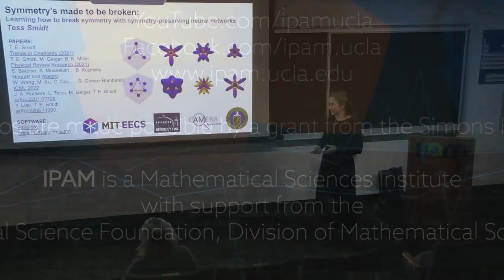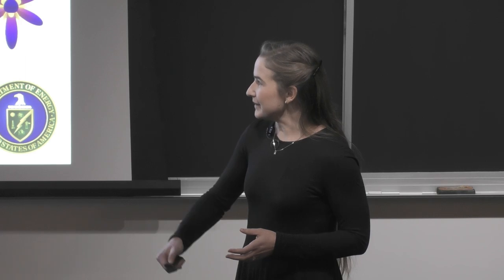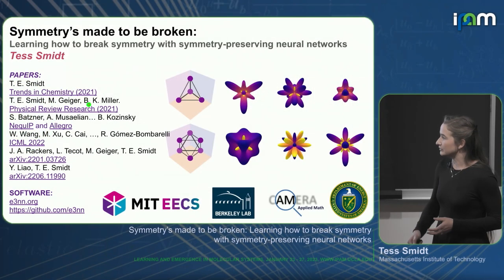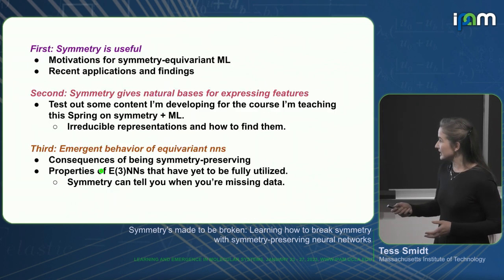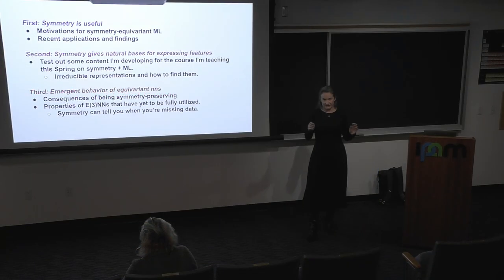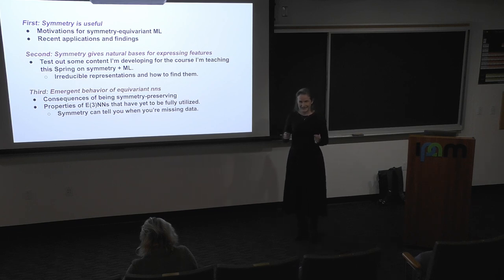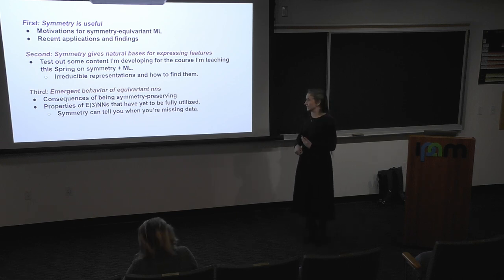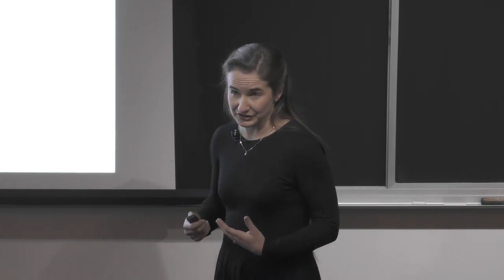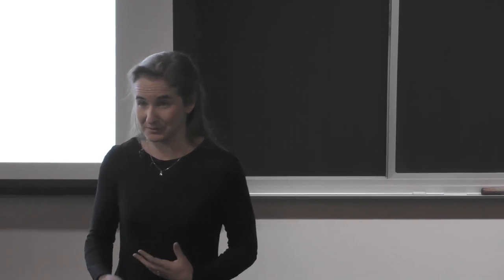My talk is going to have three parts, and I'll briefly mention some works here just for reference, and we'll talk about some software tools we've built at E3NN. First, I'm going to give a quick high-level overview. Since we've had a lot of equivariance discussions in this workshop, I'll be somewhat brief, but I wanted to highlight some relevant works that folks might be interested in. Because this is a more specialized audience, I'd like to take the opportunity to talk about some emergent behavior of equivariant neural networks, which I usually don't get to discuss because it's a bit more technically in the weeds.